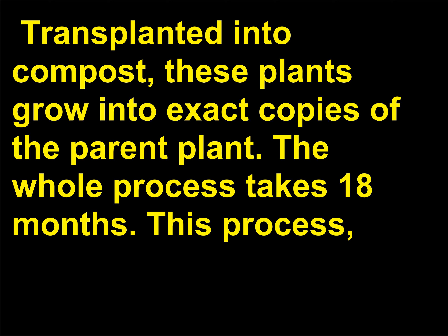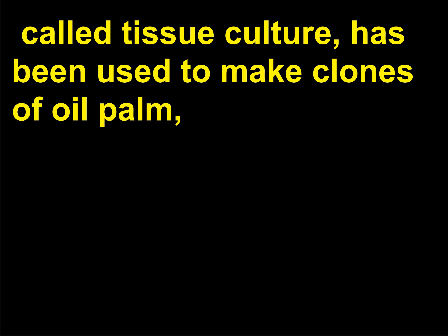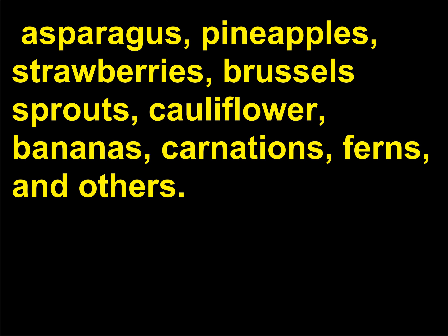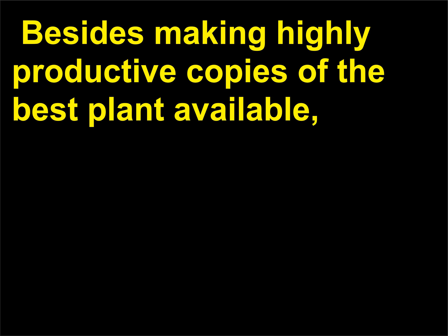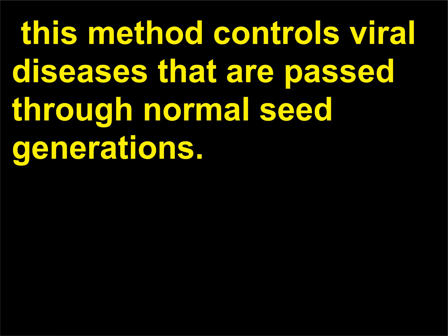This process, called tissue culture, has been used to make clones of oil palm, asparagus, pineapples, strawberries, brussels sprouts, cauliflower, bananas, carnations, ferns, and others. Besides making highly productive copies of the best plant available, this method controls viral diseases that are passed through normal seed generations.